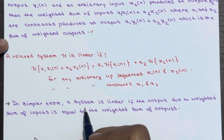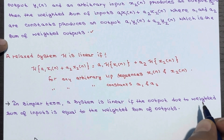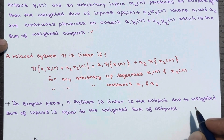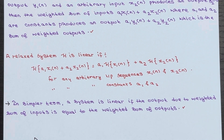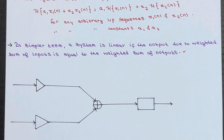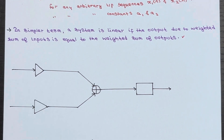In simpler terms, a system is linear if the output due to a weighted sum of inputs equals the weighted sum of outputs. Let's see the diagrammatic approach. First we sum up the inputs and then apply them to a system.